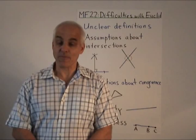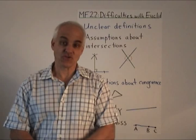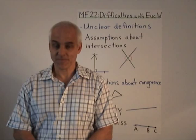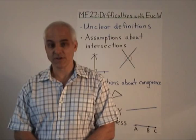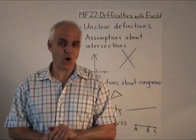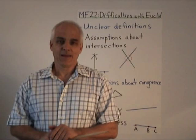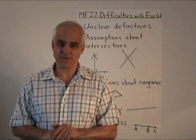Despite its serious importance as a model for mathematics research and exposition, and as an instructive manual for students, Euclid does have some flaws. Some of them we've pointed out already. The main difficulty throughout is that the definitions are weak. We don't really know what we are talking about when we study Euclid. This is a very serious difficulty, and it's one that has to be surmounted.